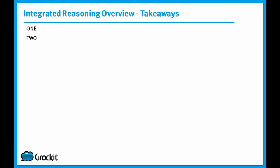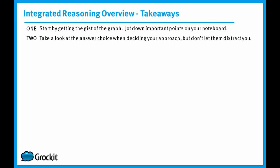Remember, when working with these integrated reasoning graphics interpretation questions, it's really important to first always start by getting the gist of the graph and jot down the important points on your note board. Look at the title of the graph. Look at the labels on both the x and the y-axis. Pay attention to the scales. Then spend a little bit of time - not a whole lot - to spot any general trends rather than analyzing every piece of information. And take a look at your answer choices to figure out how to approach the question, but don't let the answer choices distract you from actually solving the problem. The answer choices are a hint in terms of what you should be looking for, but they shouldn't be your sole focus.